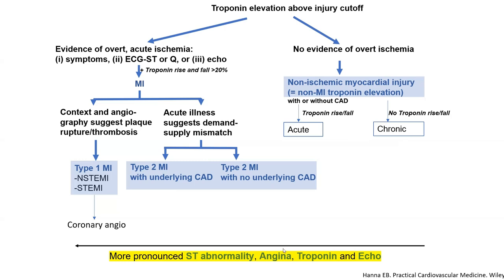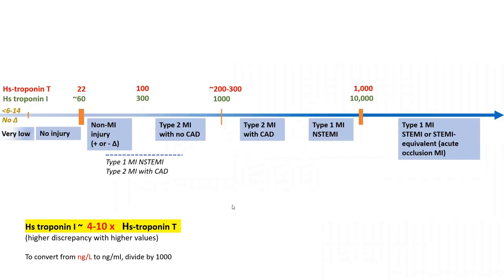How do you distinguish those? Besides the context, the more you have a pronounced ST abnormality, angina, troponin elevation, or echo findings, the more you progress from injury toward type 1 MI. Specifically regarding troponin, besides the EKG and context, you may use high-sensitivity troponin to distinguish between those four major types of myocardial injury. Here is a high-sensitivity troponin classification that I made — you will not find this in any book. I try to correlate levels with the diagnosis of MI type or injury type.